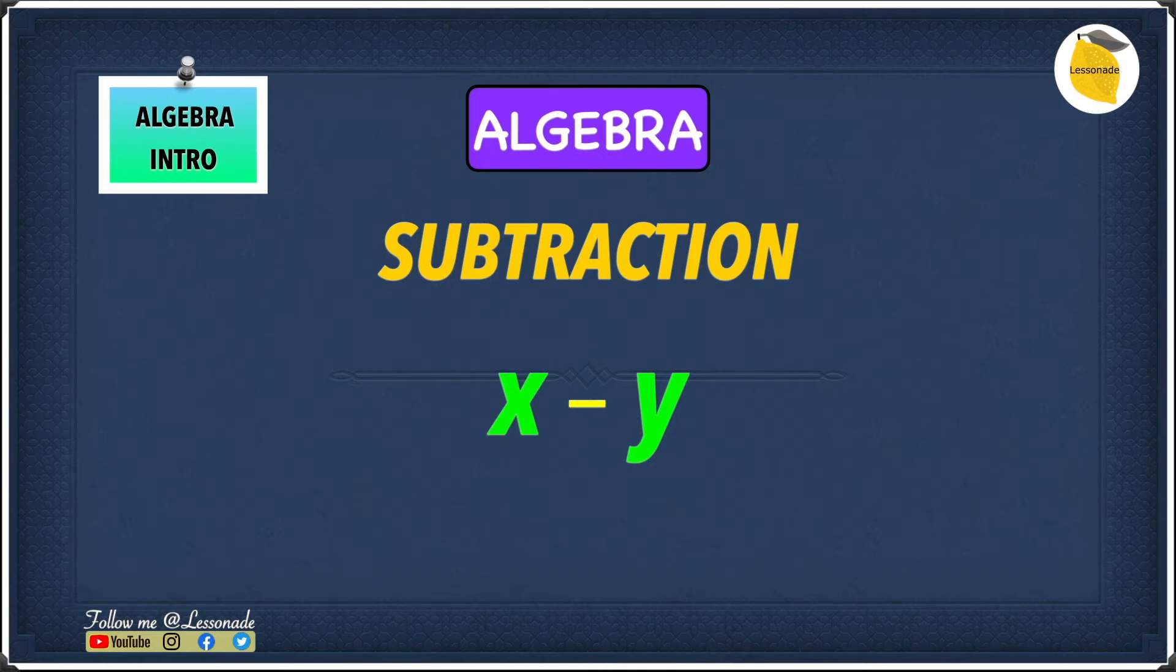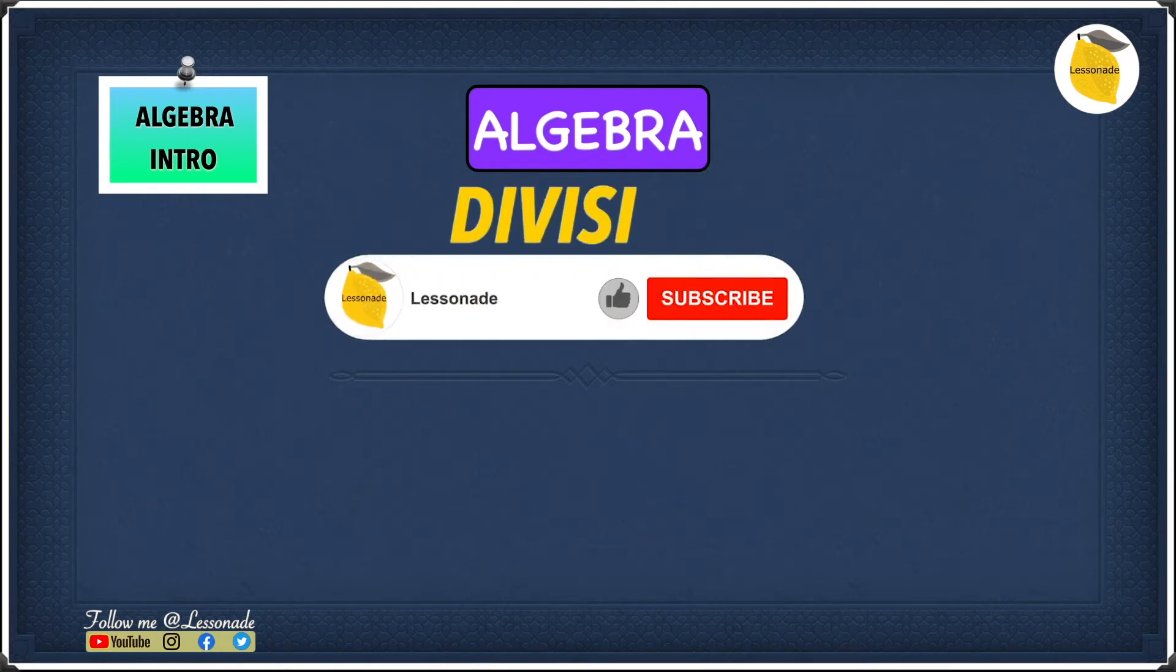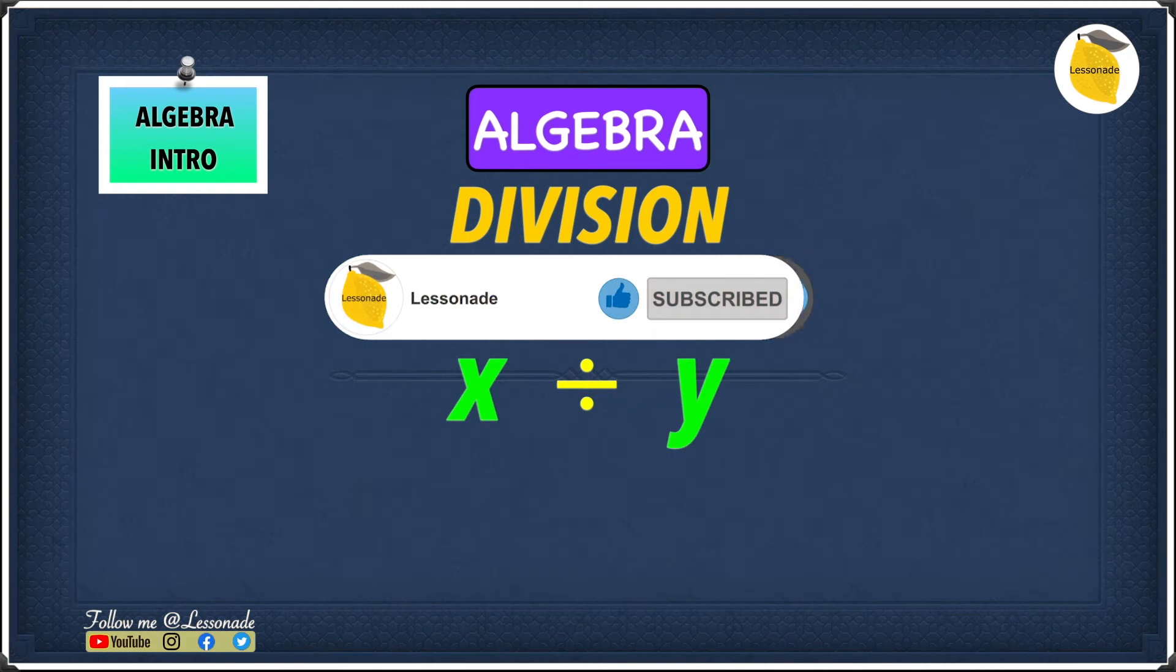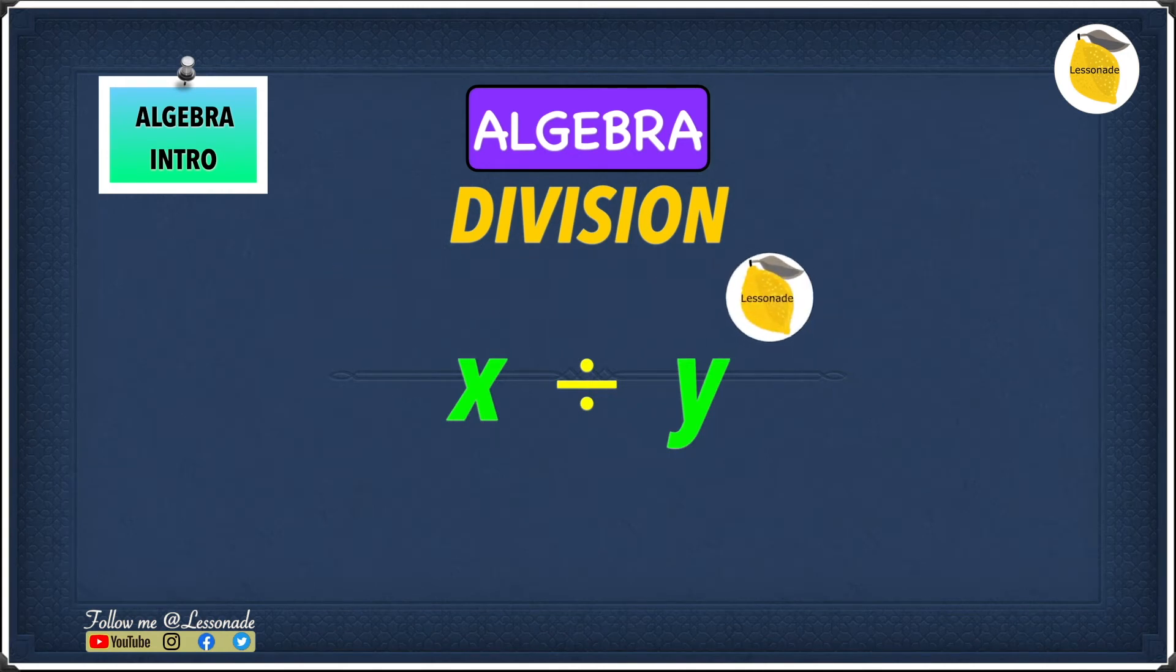But multiplication and division are a bit more different. So let's start with division first. And as you could see, we have x divided by y.